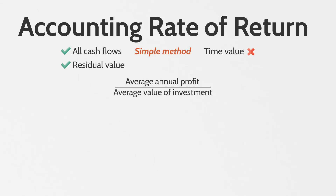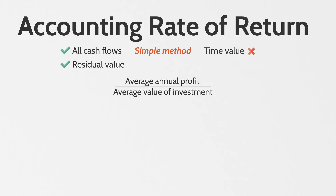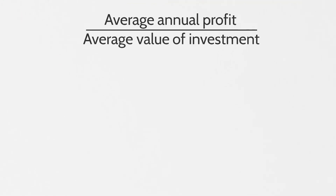This is the formula for the accounting rate of return: it's the average annual profit divided by the average value of investment. That sounds quite simple, but these are also the result of other formulas, so we actually have to do a few calculations before we can even return to this particular formula. Let's look at an example to demonstrate this.